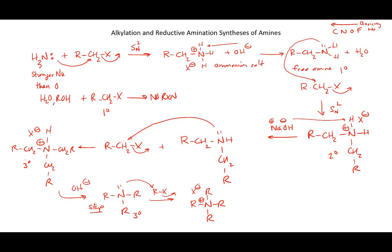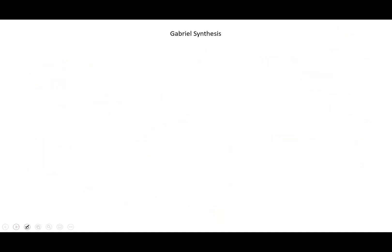Starting with ammonia, I can put whatever alkyl groups on the nitrogen to make either a primary, secondary, or tertiary amine. This is called an alkylation reaction since I'm adding an alkyl group to the nitrogen.